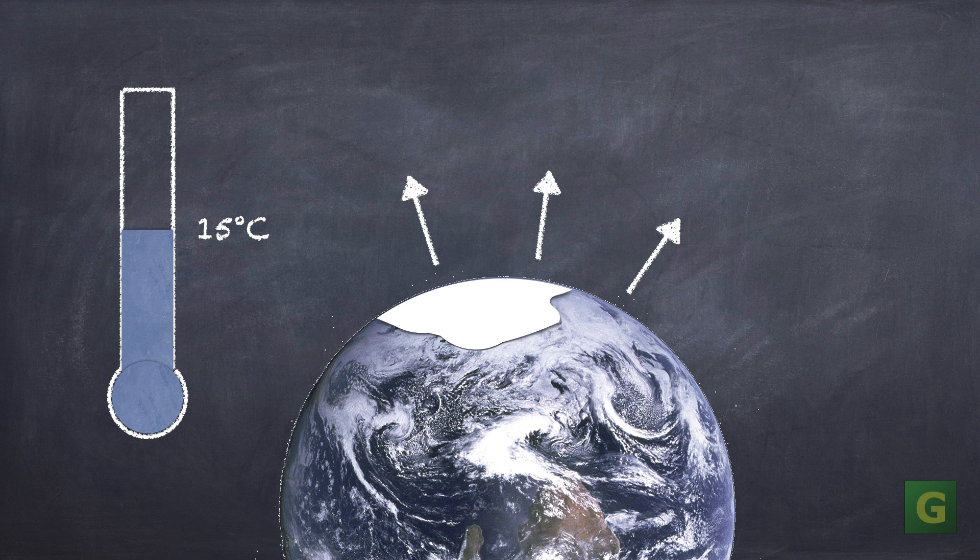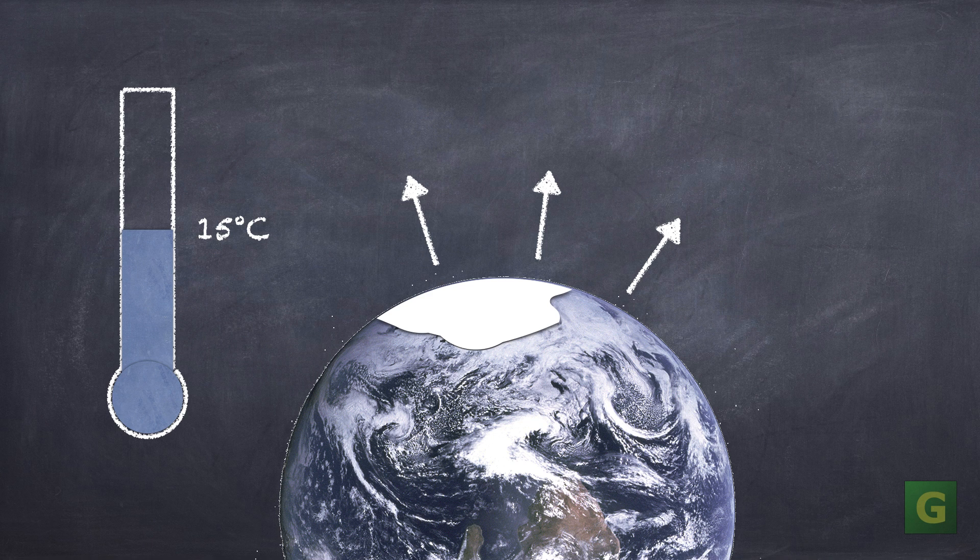A change in the reflectivity or albedo of the planet can also have an effect. If the surface gets darker, like when sea ice melts, then more energy is added to the climate system.